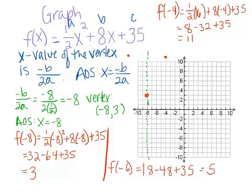So negative 6 comma 5 was another point we found, and of course we can reflect that on the other side. Here is our parabola graphed from standard form.